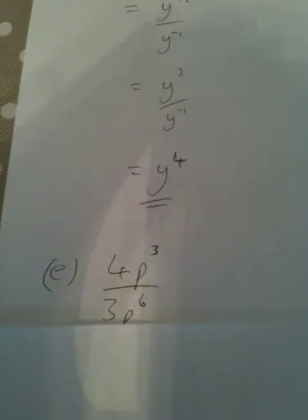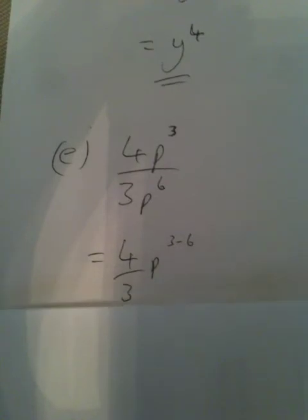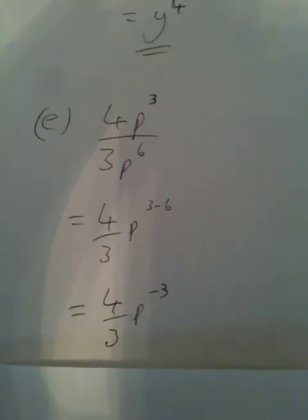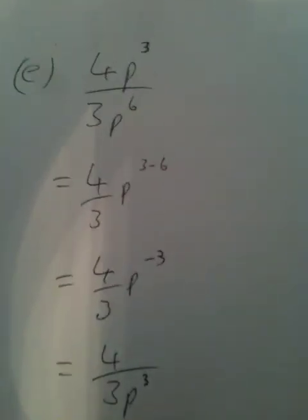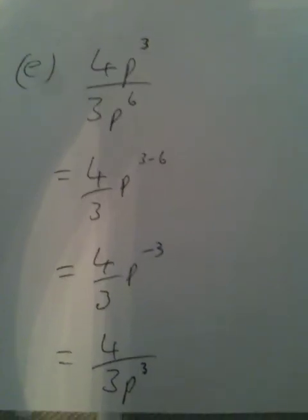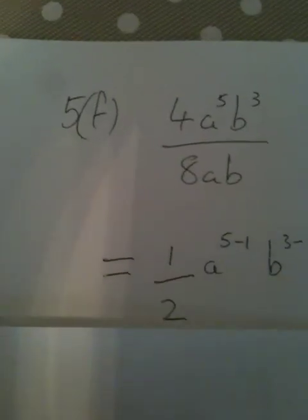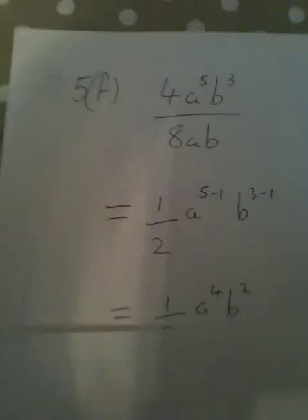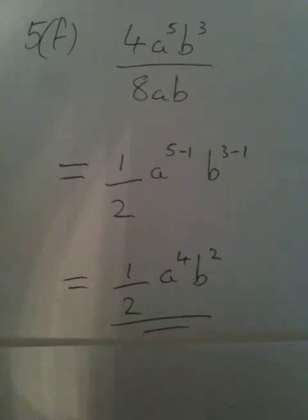Part E: 4p³ over 3p⁶. For 4 divided by 3, we like top-heavy fractions so we leave it as 4/3. For p³ over p⁶, that's p to the 3 minus 6, giving 4/3 × p⁻³. We could write that as a positive power by moving it to the bottom: 4 over 3p³. Part F has a combination of letters: 4/8 becomes 1/2, a⁵/a is a to the 5 minus 1, b³/b is b to the 3 minus 1, giving ½a⁴b².